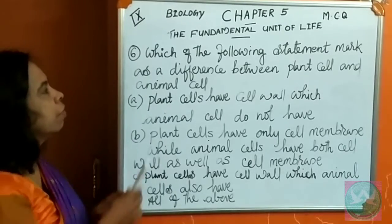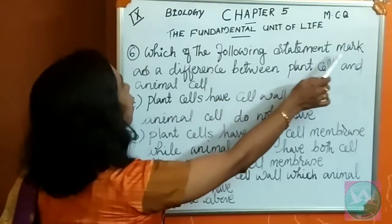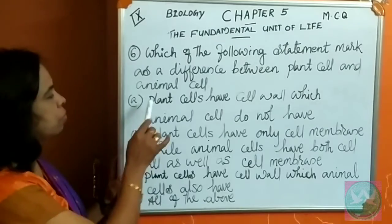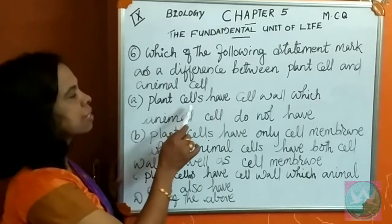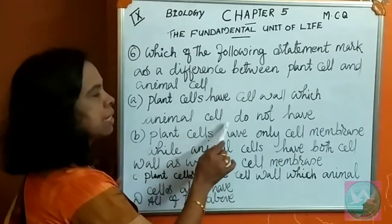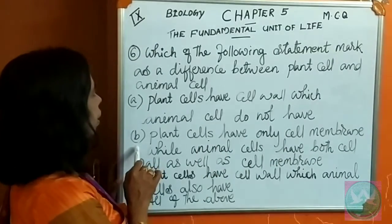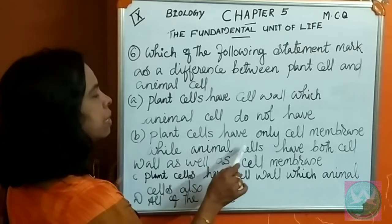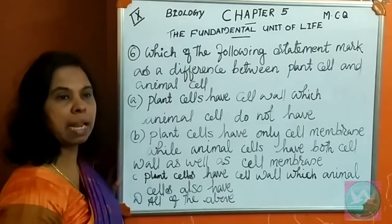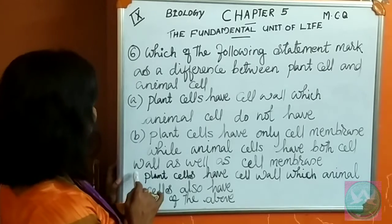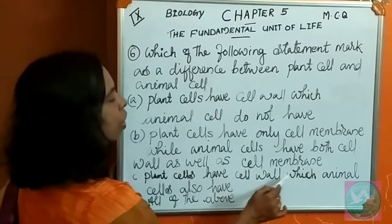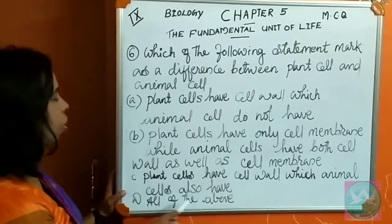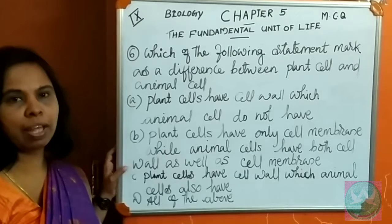Sixth question: which of the following statements marks a difference between plant cell and animal cell? Options: A. Plant cells have cell wall, which animal cells do not have. B. Plant cells have only cell membrane, while animal cells have both cell wall as well as cell membrane. C. Plant cells have cell wall, which animal cells also have. D. All of the above. Think once again and find out the answer.